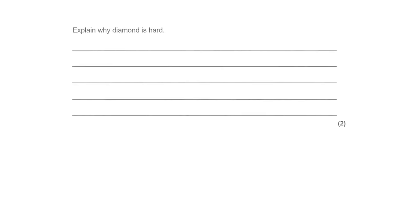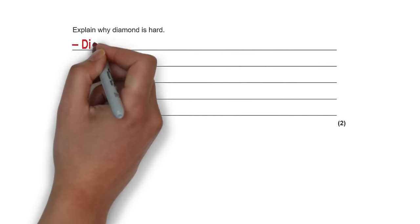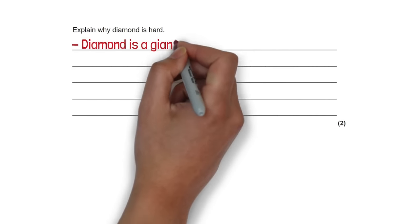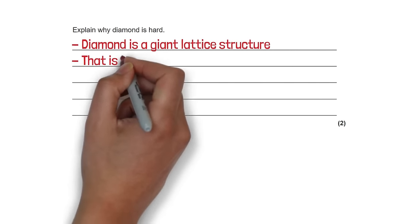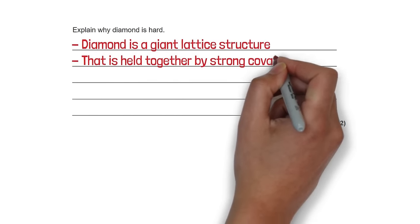The last question of this section asks why diamond is hard. Diamond is a giant lattice structure held together by strong covalent bonds.